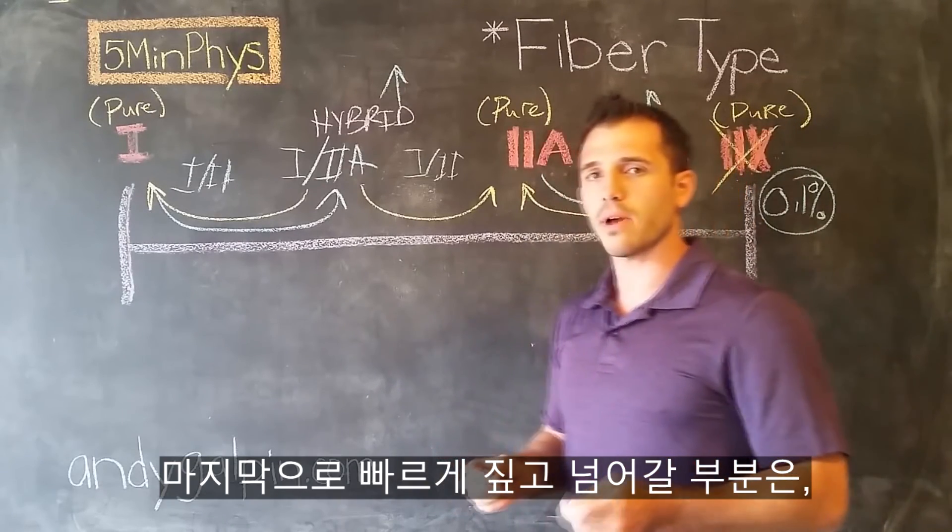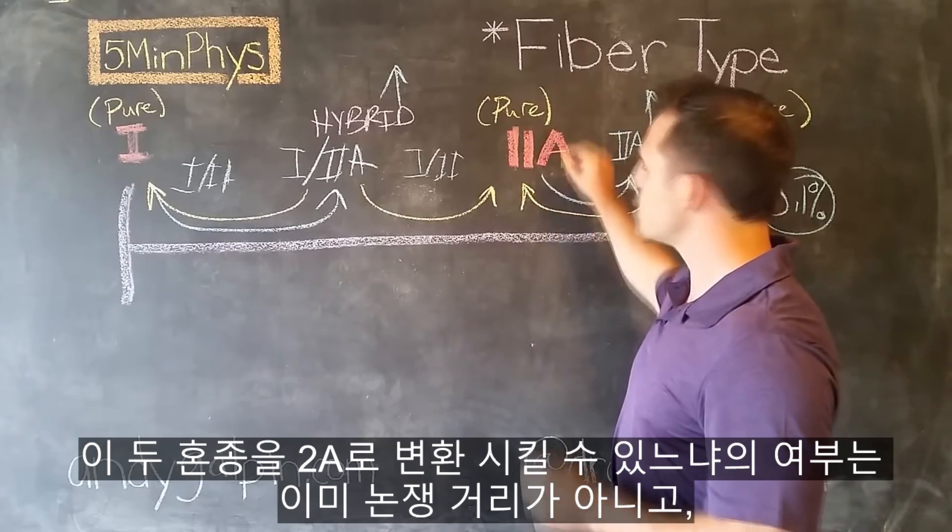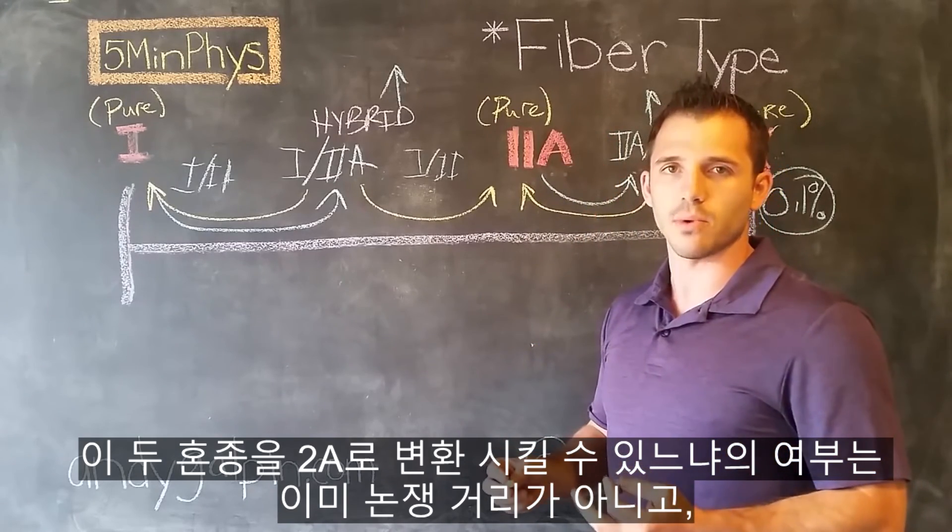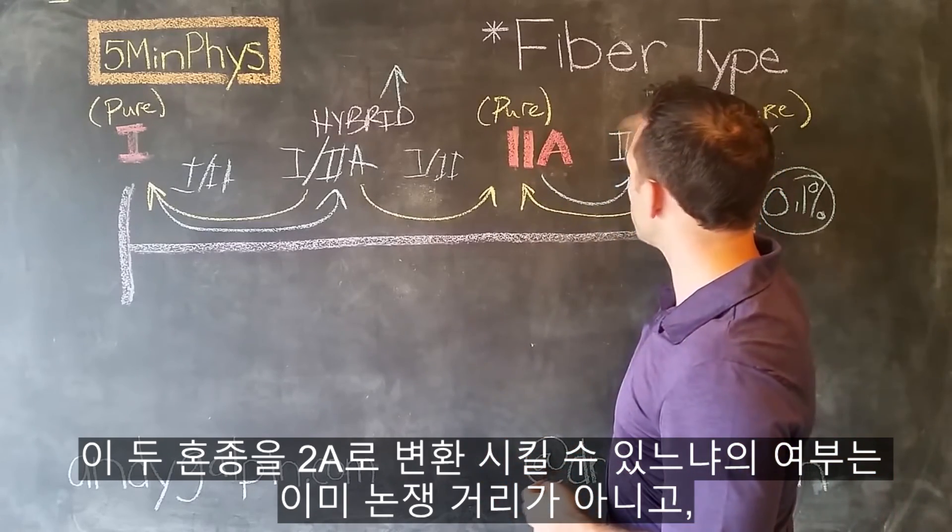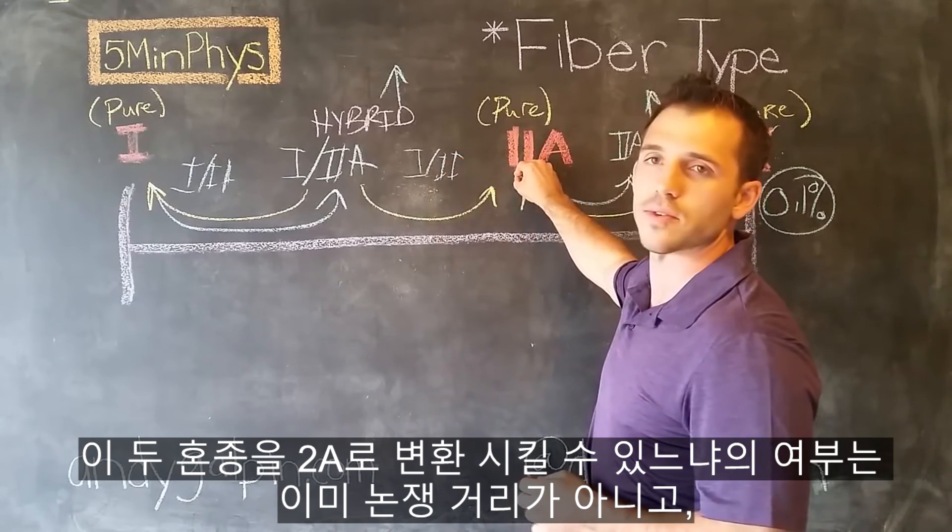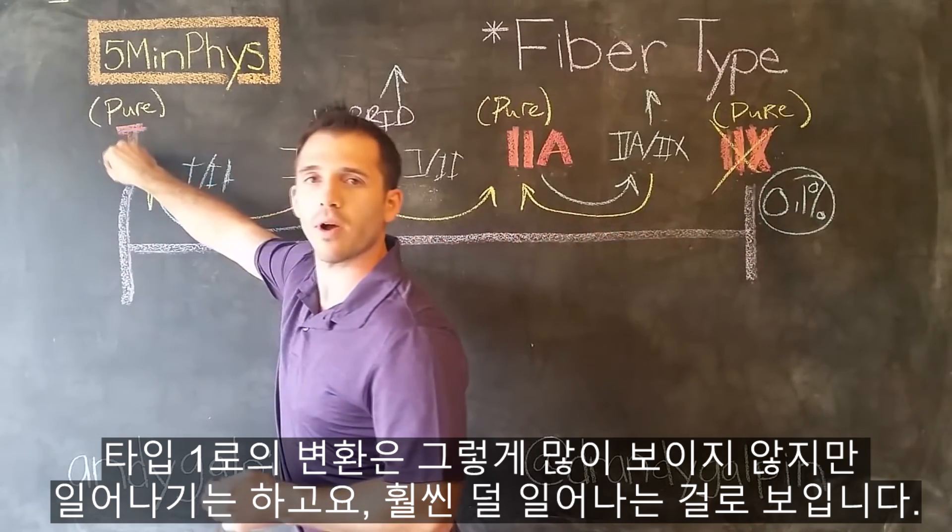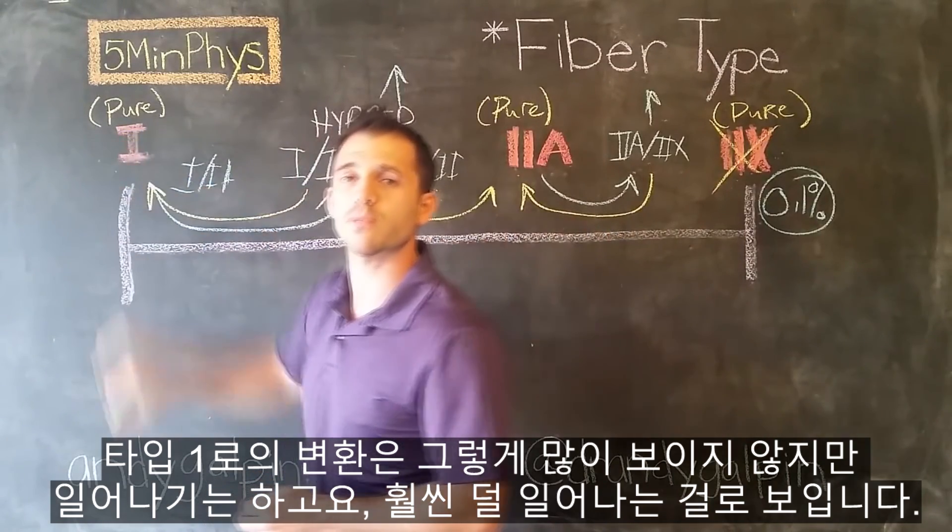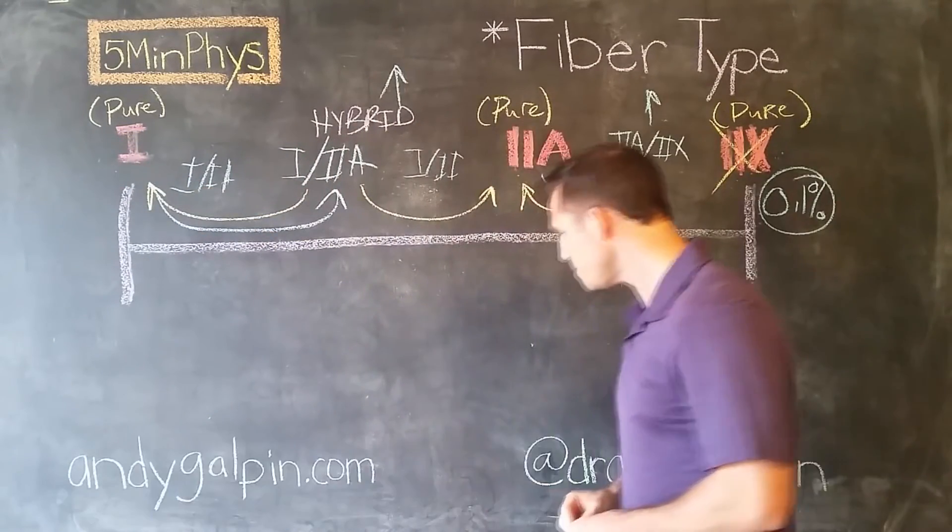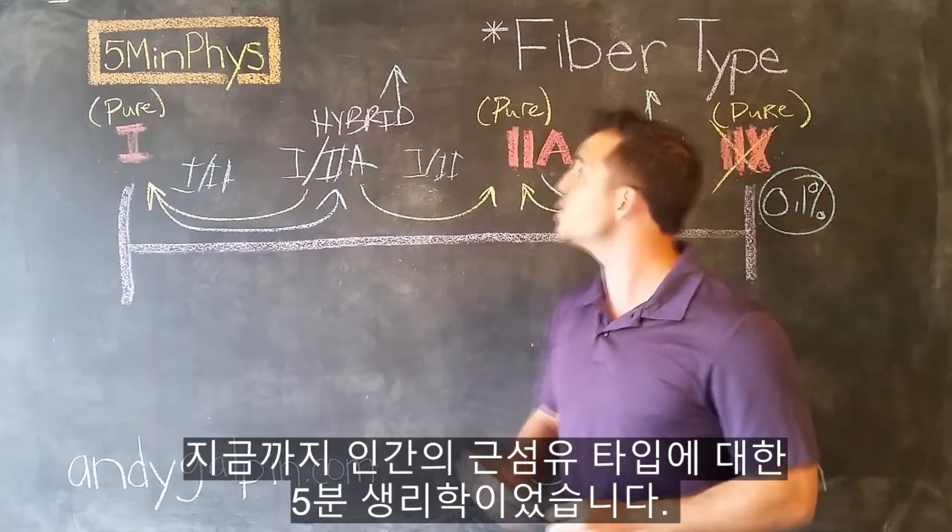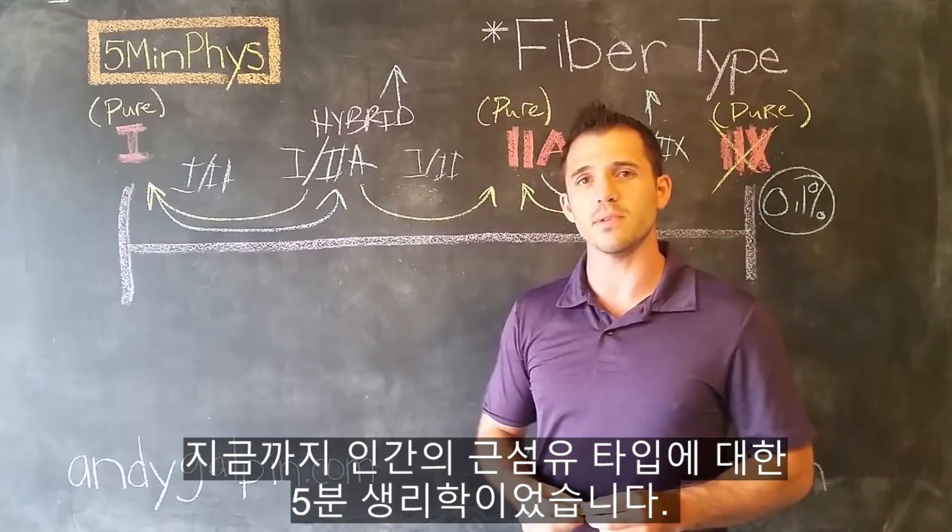So the last thing we'll talk about here very quickly is, we can't argue anymore whether or not we can convert either of these hybrids into 2A. We don't see as much conversion into type 1s, but we do see it happening, but it's probably less prevalent. So that's your 5-minute physiology talking about muscle fiber types in humans.